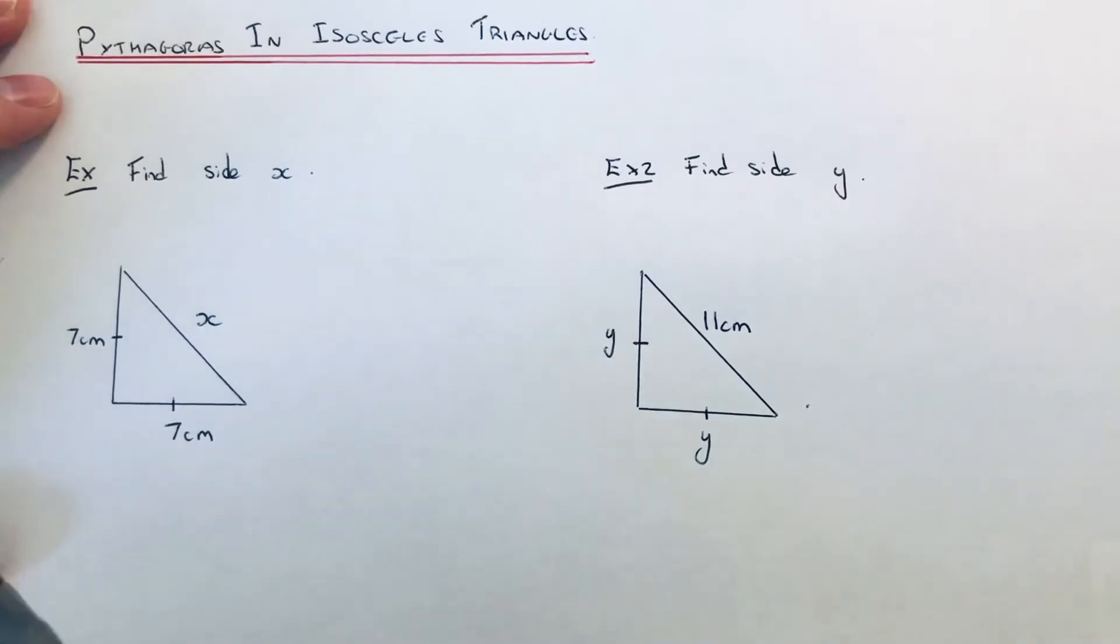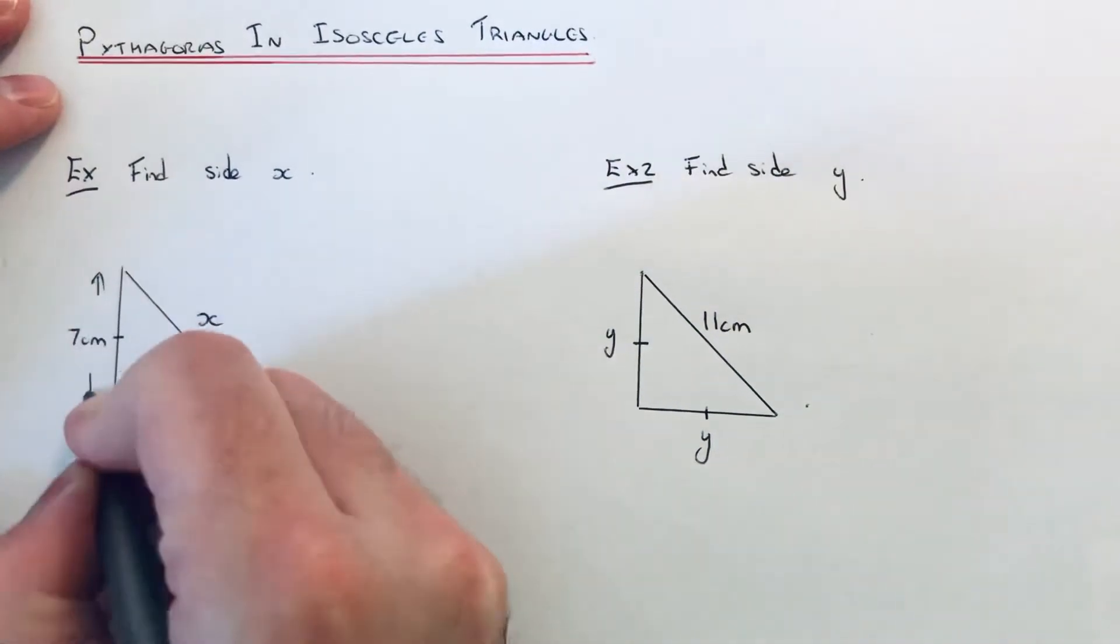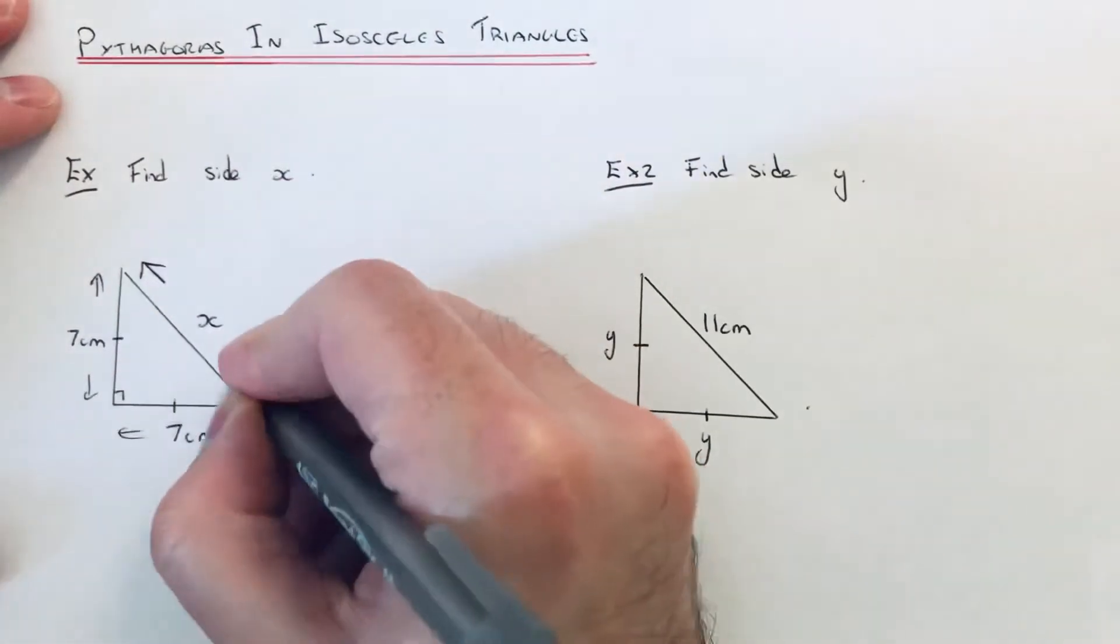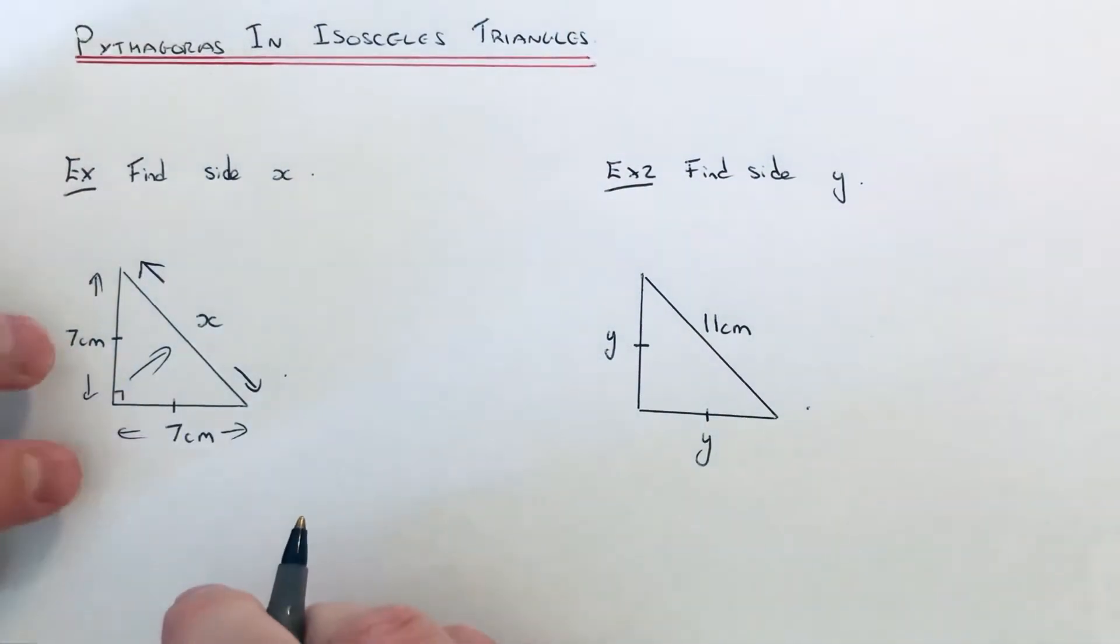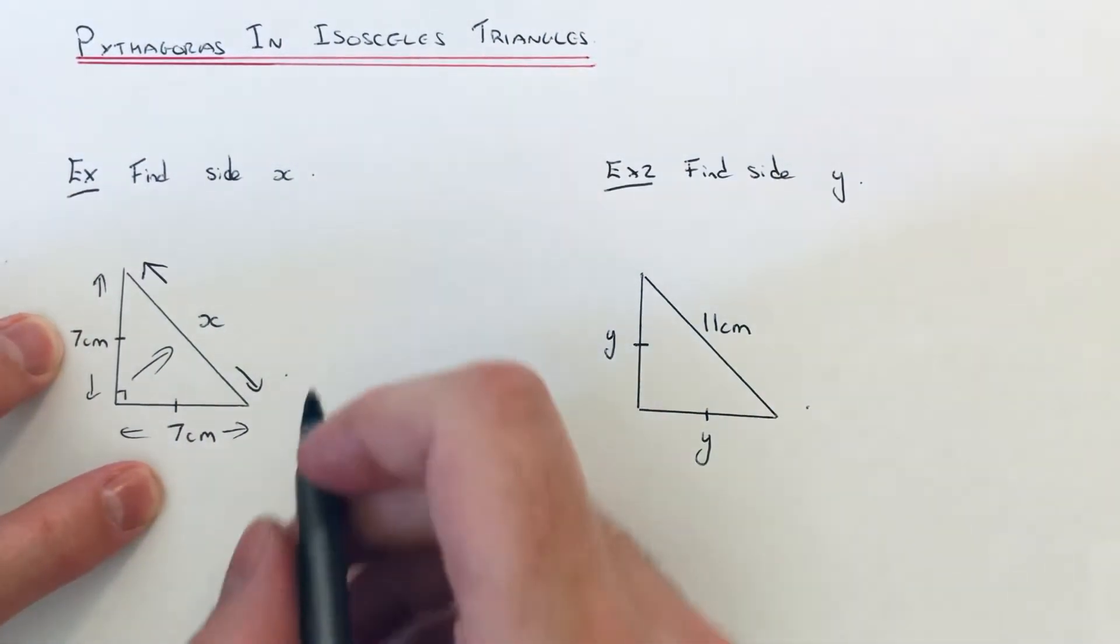Let's have a look at the first example. We've got a right-angle triangle with two sides which are seven, and we're after side length x, which is the longest side of our right-angle triangle because it's opposite the right angle. We just need to carry out Pythagoras on this.